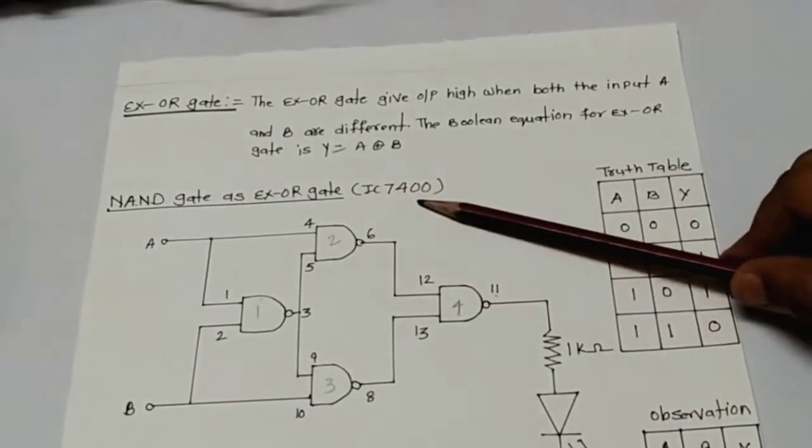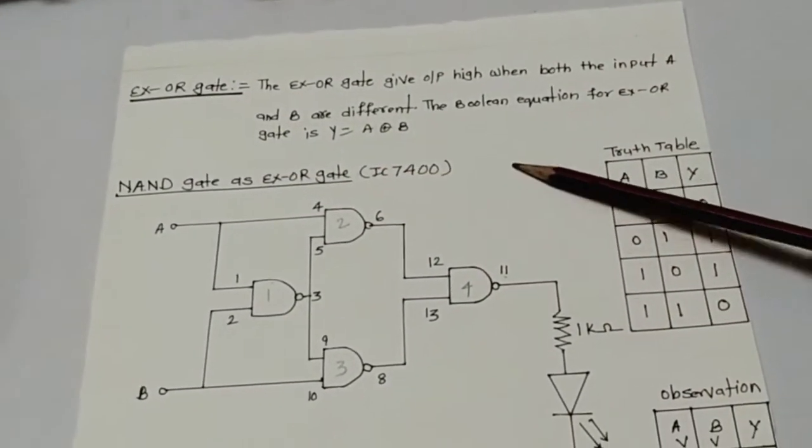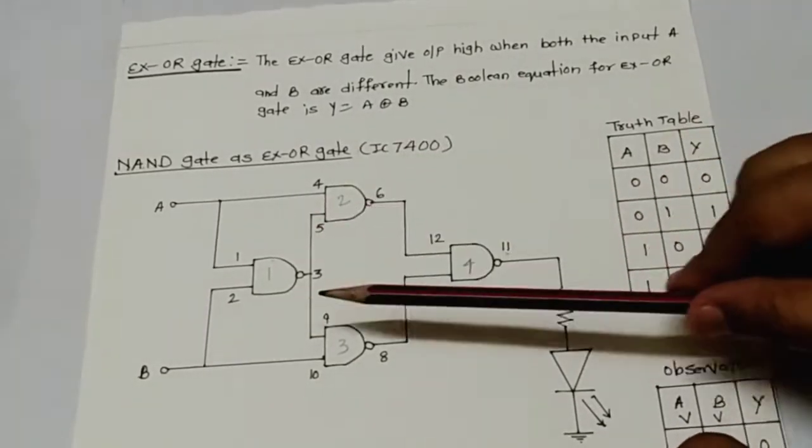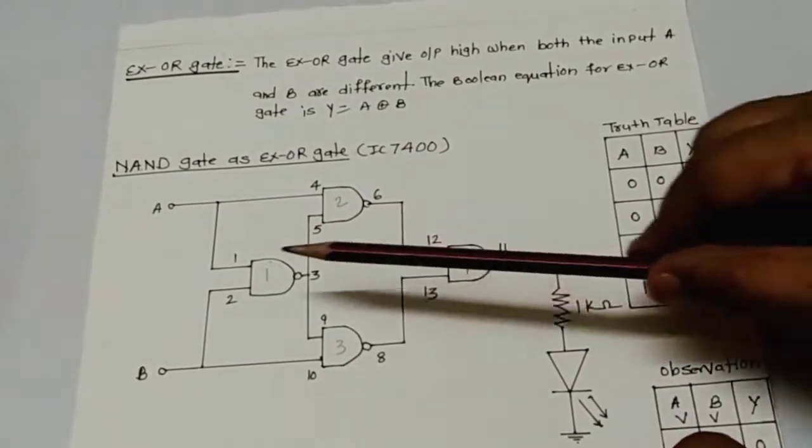The IC being used is 7400. Here we are using 4 NAND gates.